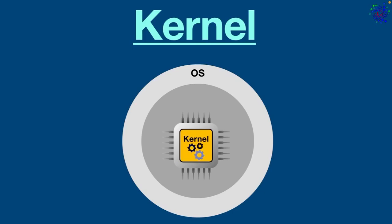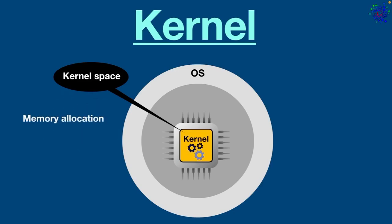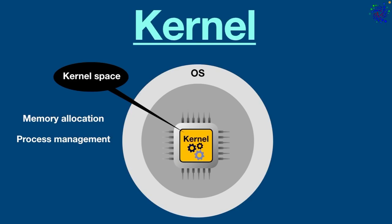The kernel is kept and usually loaded into a separate memory space known as kernel space, which is dedicated to the behind-the-scenes work needed to run a system, like memory allocation and process management. This space is protected from being accessed by other applications, and the code of the kernel is loaded into this area.